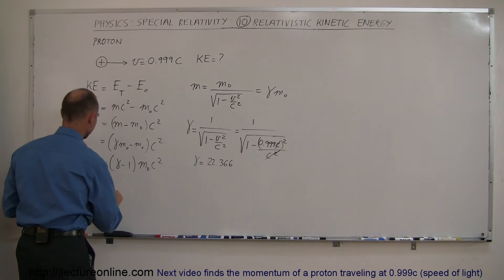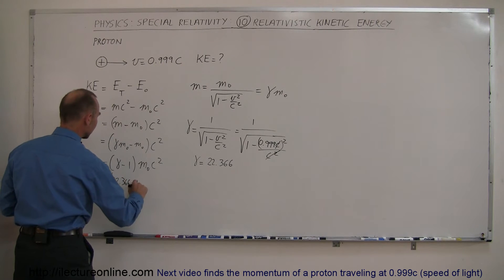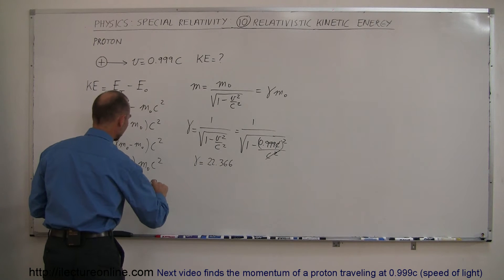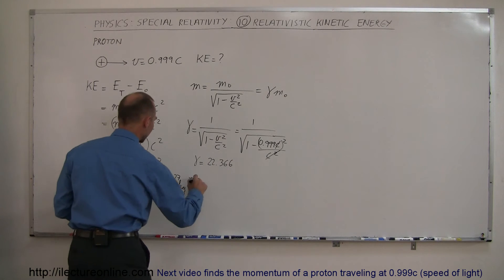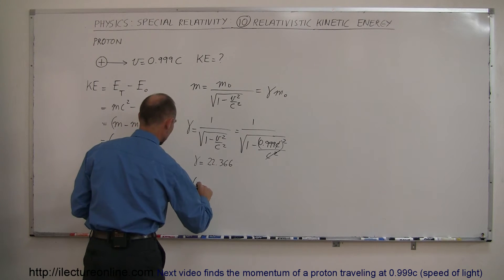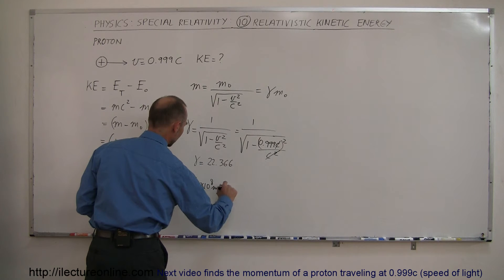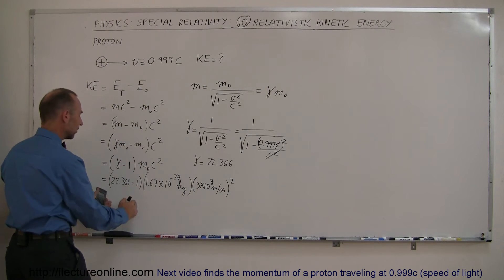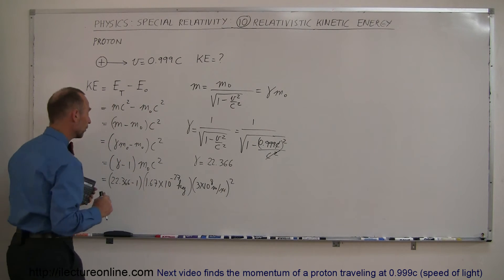If you plug that in here, this is equal to 22.366 minus 1 times the rest mass of a proton, that is 1.67 times 10 to the minus 27 kilograms. And we multiply that times the speed of light squared, so that would be 3 times 10 to the 8 meters per second. And that would be squared. So what I'm going to do is I'm going to calculate this separately because this will actually give us the rest mass energy of a proton.